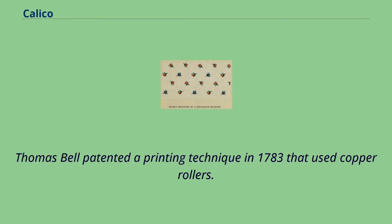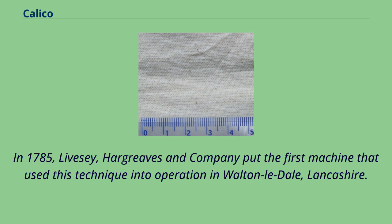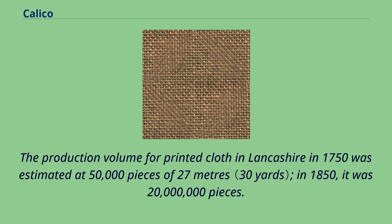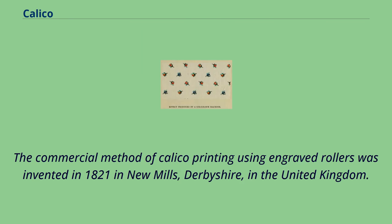Thomas Bell patented a printing technique in 1783 that used copper rollers. In 1785, Livesey, Hard Reeves and Company put the first machine using this technique into operation in Walton-le-Dale, Lancashire. The production volume for printed cloth in Lancashire in 1750 was estimated at 50,000 pieces of 27 meters; in 1850 it was 20 million pieces. The commercial method of calico printing using engraved rollers was invented in 1821 in New Mills, Derbyshire, in the United Kingdom.